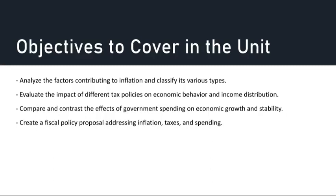The third topic will be comparing the effects of government spending. Government spending plays a dual role in influencing economic growth and stability. Government spending on infrastructure, education, and research and development can stimulate economic growth by boosting productivity and innovation. Counter-cyclical government spending, such as increased public investment during recessions, can mitigate the negative effects of economic downturns by boosting aggregate demand and employment. Balancing the objectives of economic growth and stability is crucial for effective fiscal policy management.